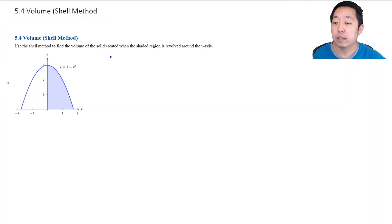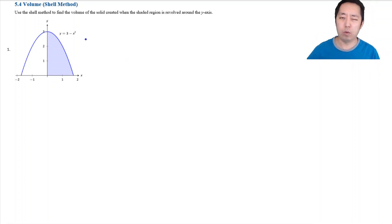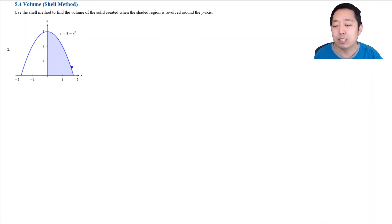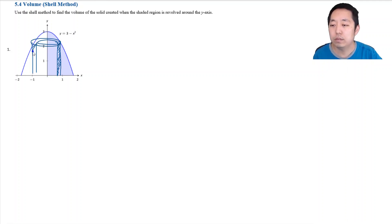Now we're going to look at the shell method to find volumes. This creates a different shape. You can technically do most volumes with the washer method, but sometimes it's easier to use the shell method. The big idea is I'm still going to create a representative rectangle, and when I revolve this shape around the y-axis, it creates a really thin cylindrical shell.